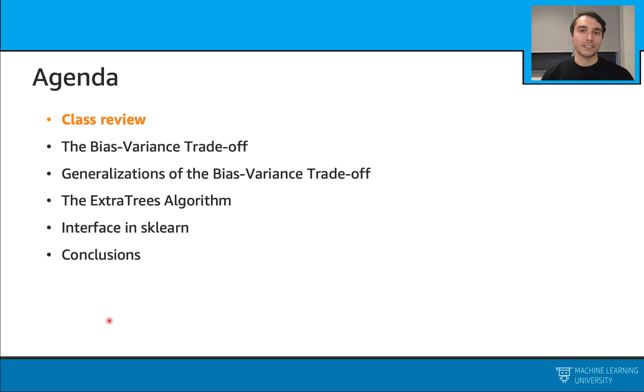Hi, everyone. Welcome to our second lecture. In this lecture, we will dive into this bias-variance trade-off topic. This is an important topic in machine learning. Bias and variance have a great impact on overall model performance.